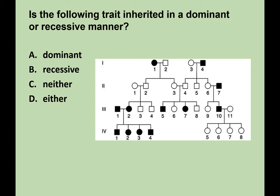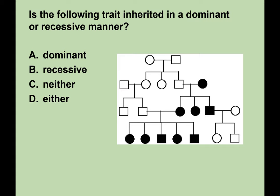Quick practice: is the following trait dominant or recessive? Work from the bottom up — if you see an affected child with two unaffected parents, it's recessive. If every affected child has an affected parent, it's dominant. All you need is one instance of the rule to make the determination. Practice, practice, practice.